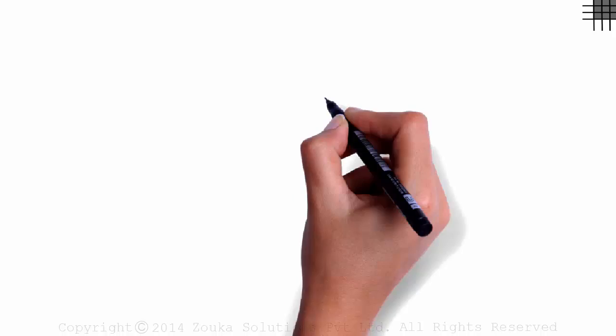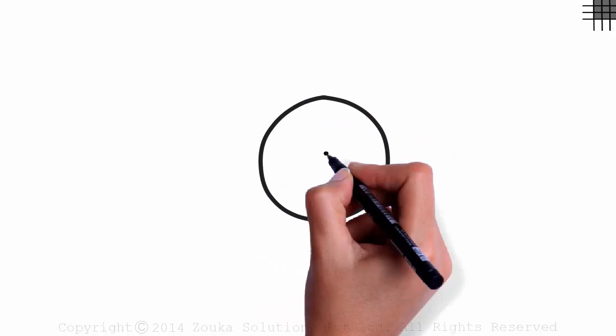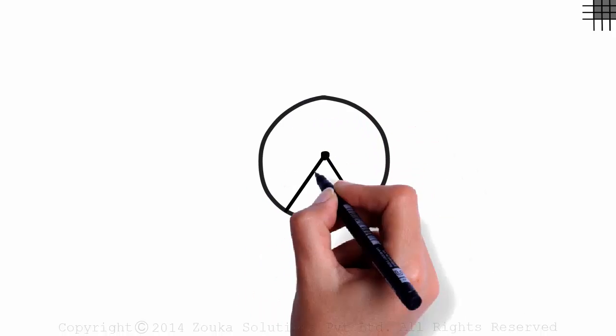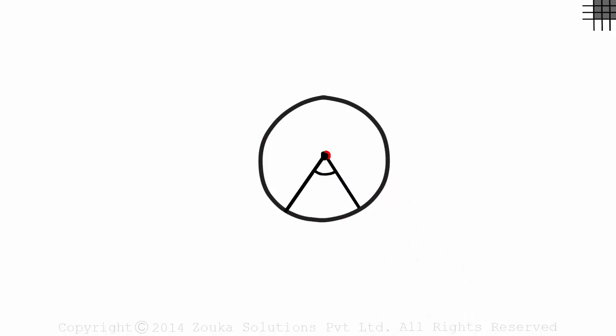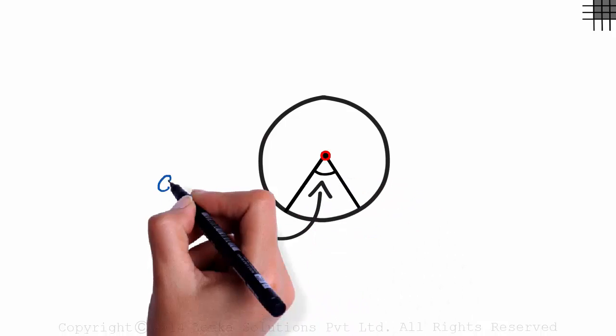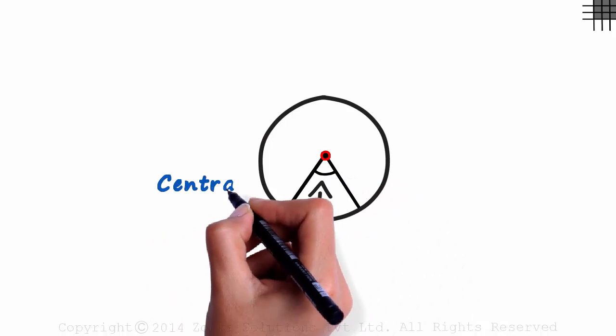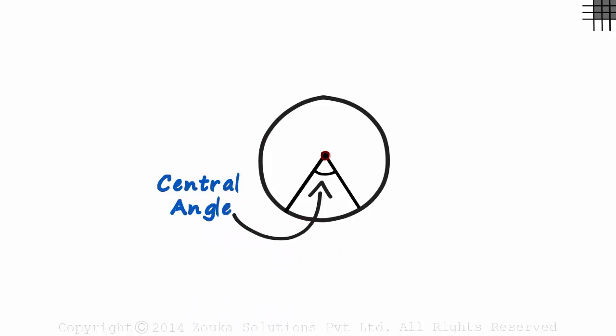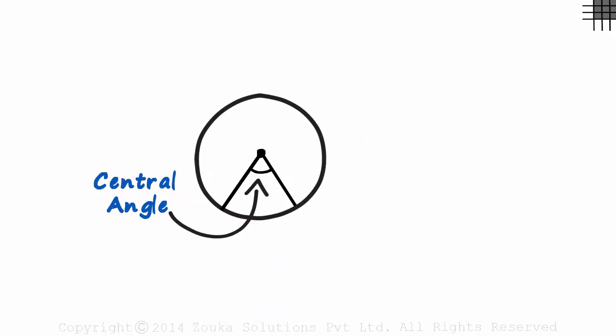We need to understand just two simple angles in a circle. An angle with its vertex at the center of the circle is called a central angle. They are simply two radii forming an angle.